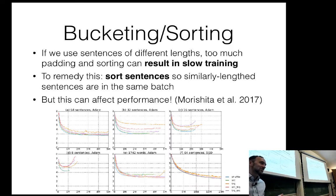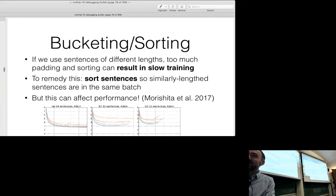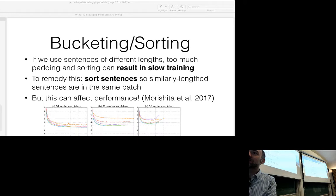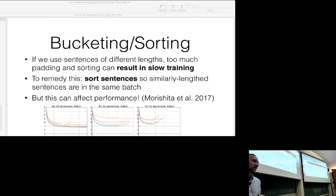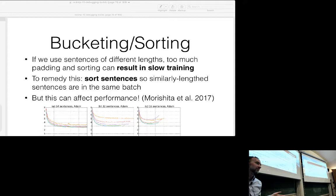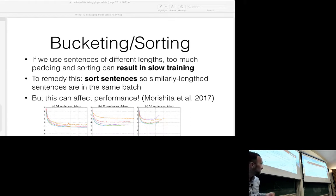There's even a paper called 'Don't Decay the Learning Rate, Increase the Batch Size,' which suggests starting with small batches and moving to larger batches at the end of training. There's an interesting connection between learning rate and batch size. Transformers like really large batch sizes — likely because they have lots of parameters and very little inductive bias, so they need very stable training. If you jump around a lot, it causes them to get into a bad space.